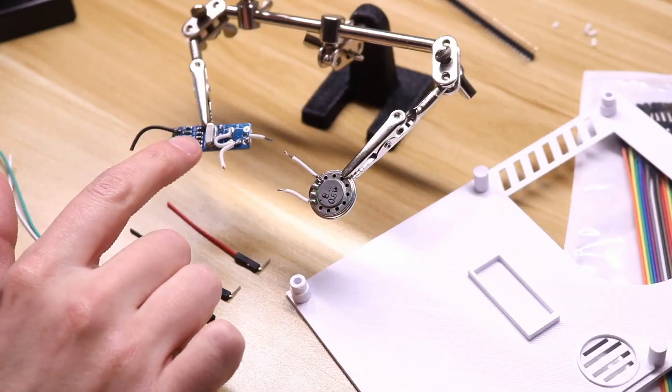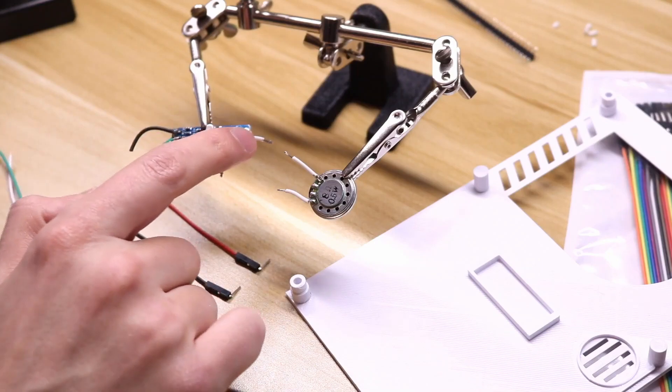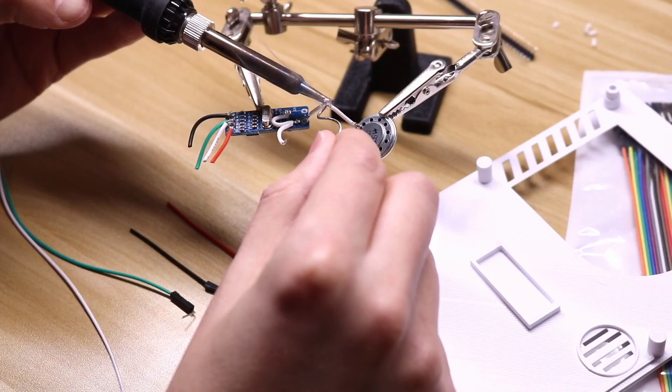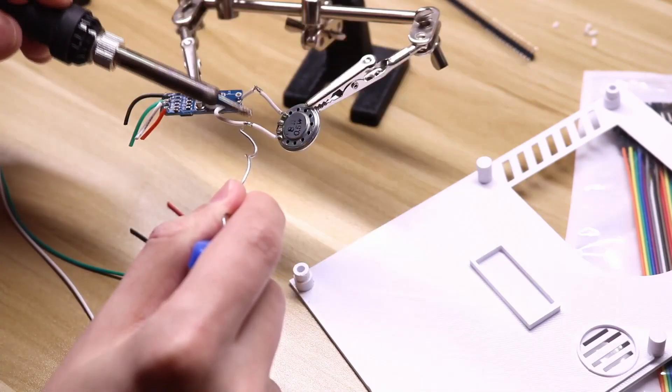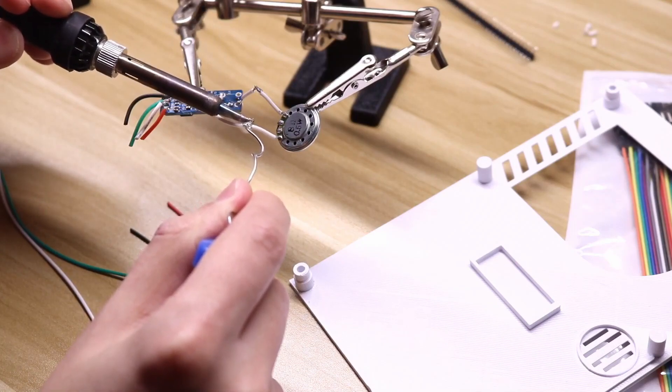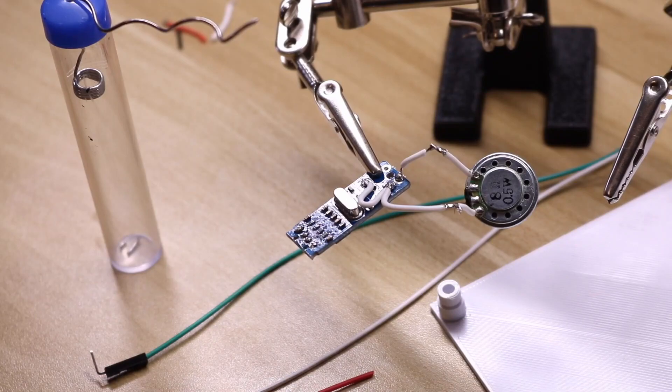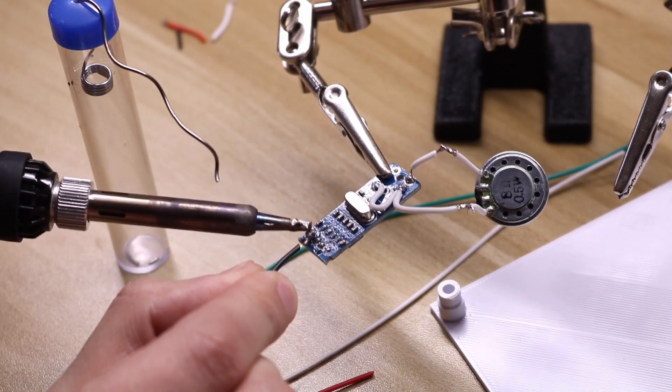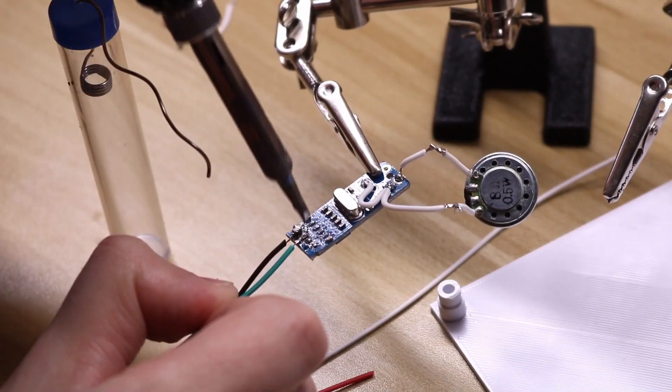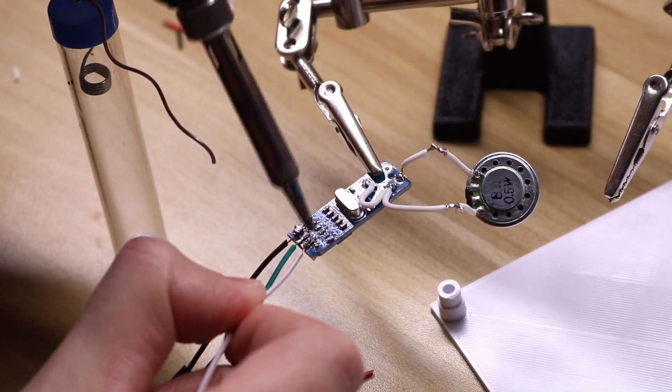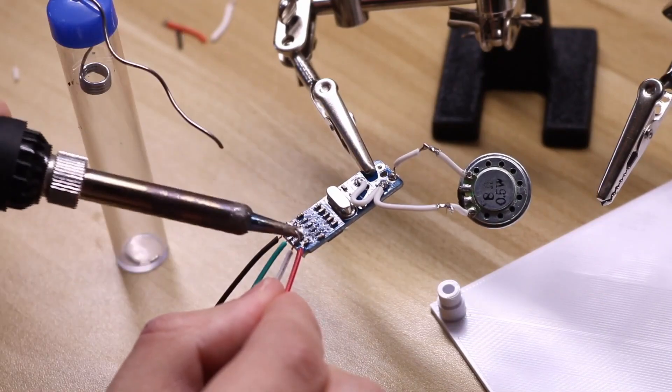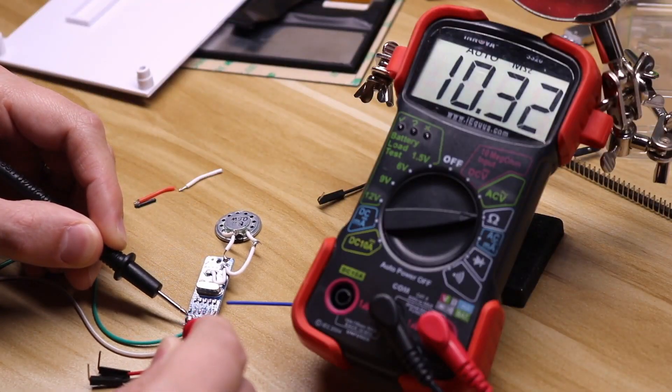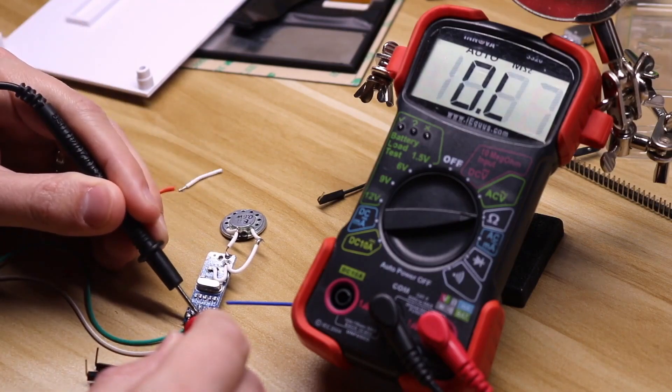First, we're going to solder the speaker to the sound card here, and you're going to need about 40 or 50 millimeters of wire between the sound card. Now we're going to solder on the pin headers to the USB connection. After you're done soldering the USB, make sure you don't have any shorts between pins.